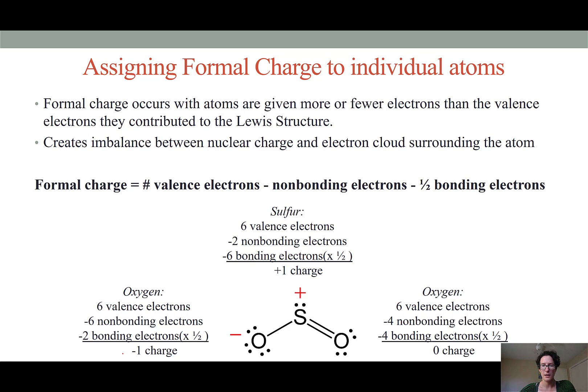You'll notice that if we sum up all of the formal charges on this molecule, we have negative one and positive one. Those cancel each other out, leaving a net charge of zero, which is good because we know that sulfur dioxide is an uncharged molecule. If we were dealing with a polyatomic ion, we would want the formal charges on each atom to add up to the same charge as we know that polyatomic ion to have.